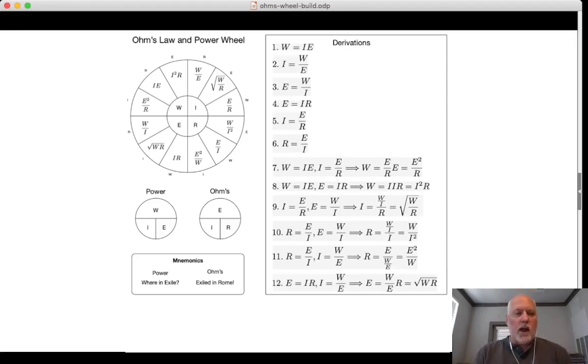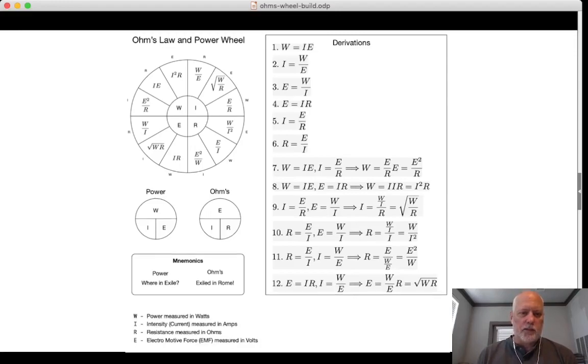And we did it in a way that we can work through it one step at a time, go around the wheel. So that's my rational wheel. One last little bit is W-I-R-E to remember it, power in watts, intensity in amps, resistance in ohms, E in volts. That's it. Thanks for watching.